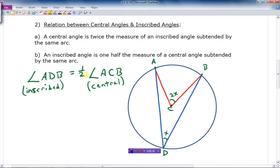Well, basically, this says that the inscribed angle is one half of that. And in other words, we could also say that angle ACB is 2 times angle ADB. Same thing.